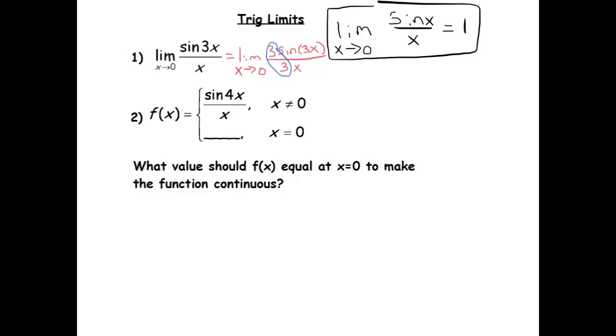And then what you could do is use a little property of limits by taking that top 3 and putting it out front. So it's sine of 3x divided by 3x, and what happens to be the case is that the structure of this, 3x, ignoring that 3 out front, this is the limit as x goes to 0 of the sine of 3x divided by 3x. Since those are the same, the behavior ends up being the same as this here. So this here in blue is just a 1, so it's 3 times 1, which is a 3.